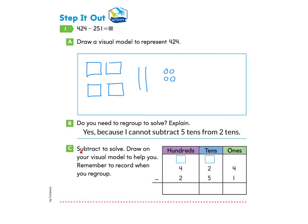Now we're ready for part C. Subtract to solve. Draw on your visual model to help you. Remember to record when you regroup. Okay, let's take a look. So we are going to be subtracting 251. We always start with our ones column. We subtract one, and then we look to the tens column and there are five. We don't have five to subtract. So we're going to need to regroup. So we'll take our hundred and cross it out. And we know that this hundred is actually 10 tens. So now we have 10 tens showing.